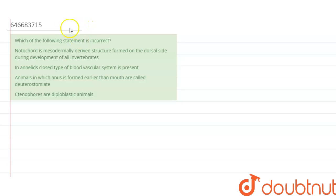The question says which of the following statement is incorrect. Now it is asked about incorrect statement. Let us see. The first statement is notochord is mesodermally derived structure from the dorsal side during the development of all invertebrates.